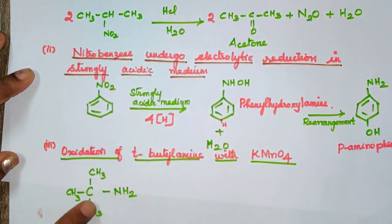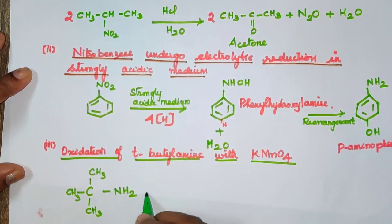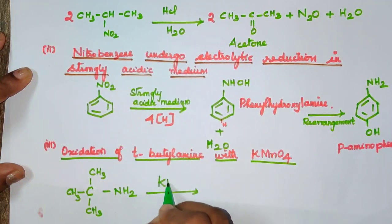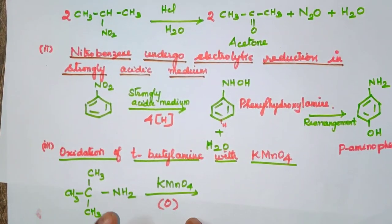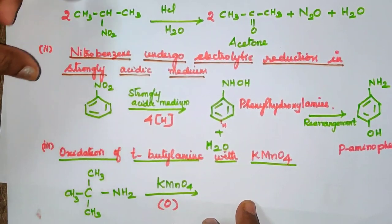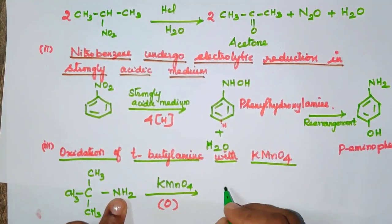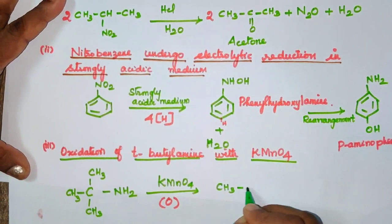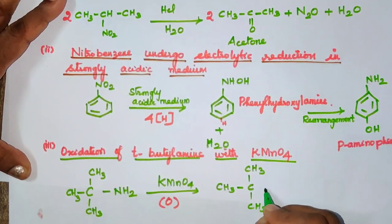The reaction is oxidation using KMnO4. This is a tertiary amine being oxidized to give a tertiary nitro compound. The NH2 group is converted to NO2, giving the product CH3-C(NO2)-(CH3)2.